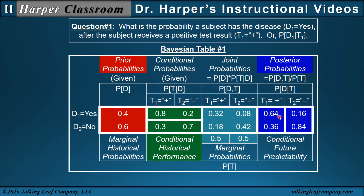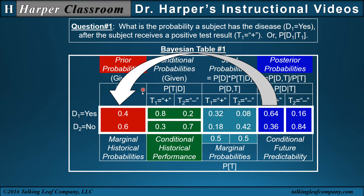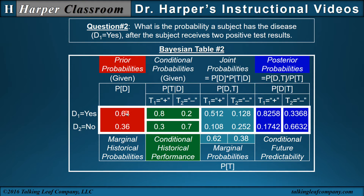If 0.64 is not high enough, we might administer the test a second time. After the first positive result, our probabilities are 0.64 and 0.36. These then become our prior probabilities for a second test administration. Multiplying gives new joint probabilities, summing gives new marginals, and dividing gives new posterior probabilities. With two positive results, the probability goes from 0.4 to 0.64 to 0.8285. However, if the first test is positive and the second is negative, it drops to 0.33 — not back to 0.4 — because the results are passed through the test's performance metrics.